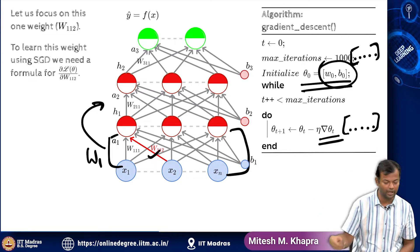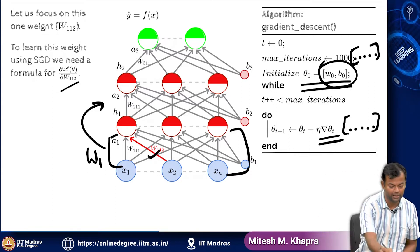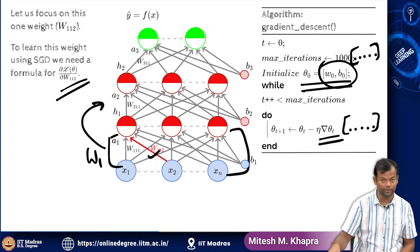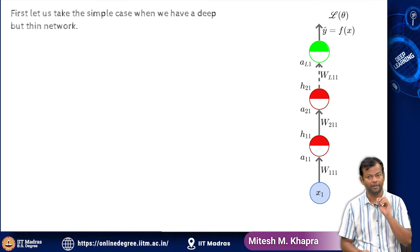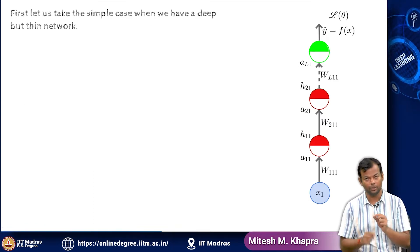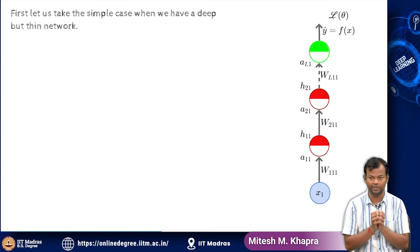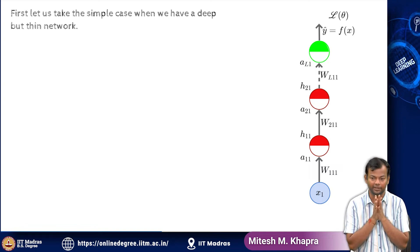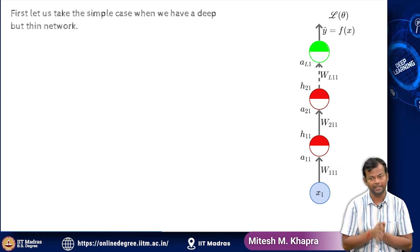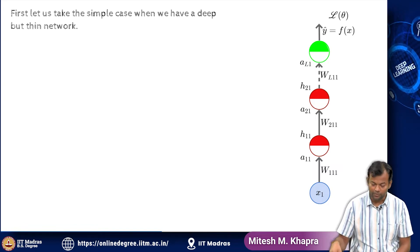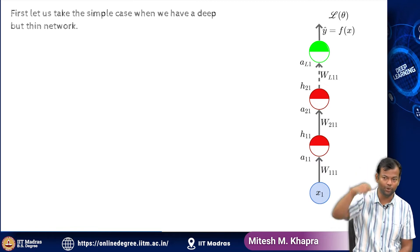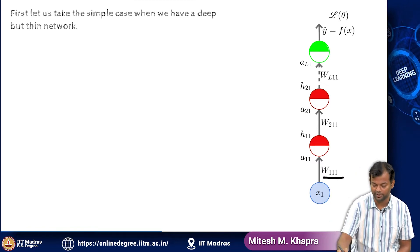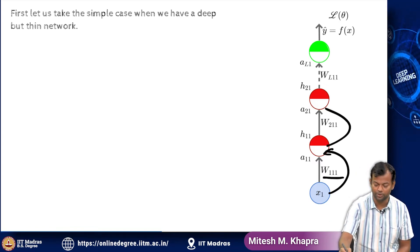But that is for later. For now, I want to understand how to compute this. So let us look at a very simple deep neural network — a very thin network, which is deep, meaning that every layer has just one neuron and I have just one weight which connects my input to that neuron and so on.